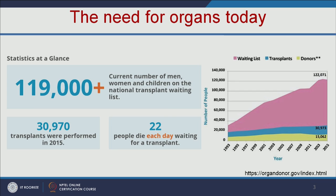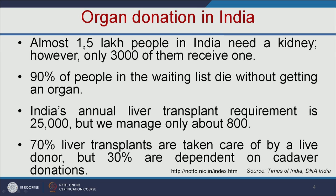Let us see the statistics in India. In India, almost 1.5 lakh people need a kidney, but only 3,000 of them receive it, and 90% of people on the waiting list die without getting an organ. India's annual liver transplant requirement is 25,000, but we manage only about 800. 70% of liver transplants are taken care of by a live donor and the remaining 30% depend on cadaver — that is, dead body — donation.